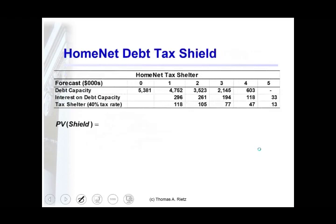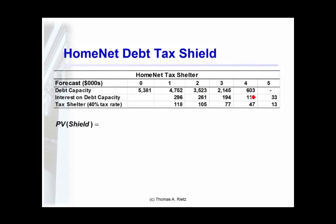This was shown in the last video. The debt capacity values we obtained were: 5,381 in period 0; 4,752 in period 1; 3,523 in period 2; 2,145 in period 3; and 603 in period 4.